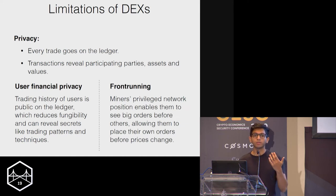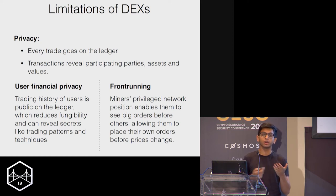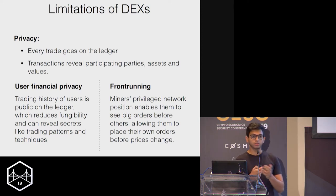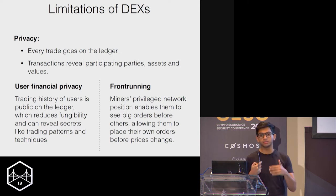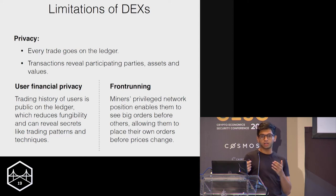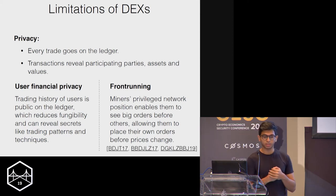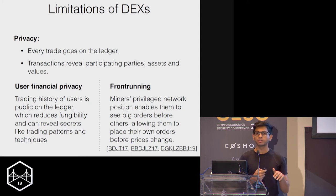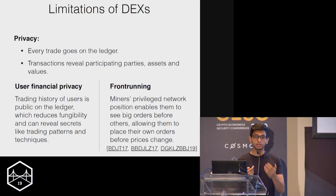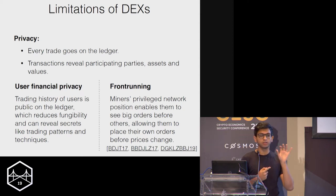In front running, a network node with a privileged position — well-connected to other peers — can look at transactions for trades before the rest of the network sees them, and use this information to place orders. For example, if I'm a miner and I see a big order coming through, I can place my own order before prices change, and then sell my coin taking advantage of the price difference. This is not just a theoretical attack — over the past two to three years, there's been a series of works from IC3 showing how to exploit this privacy leakage, for example to harm the stability of the underlying chain itself. See Flash Boys 2.0 for more.